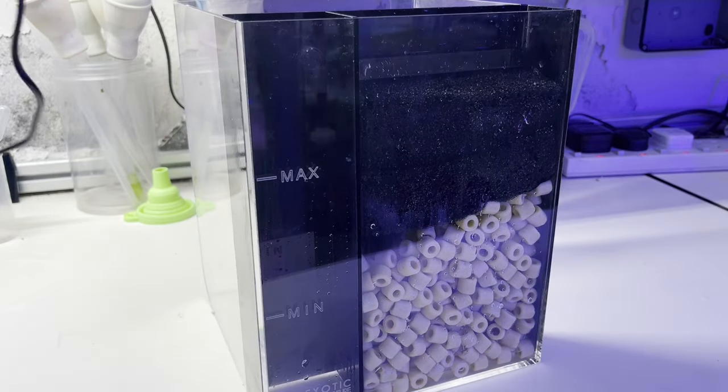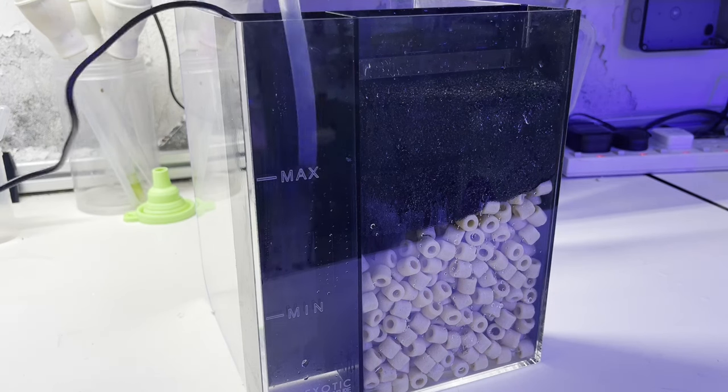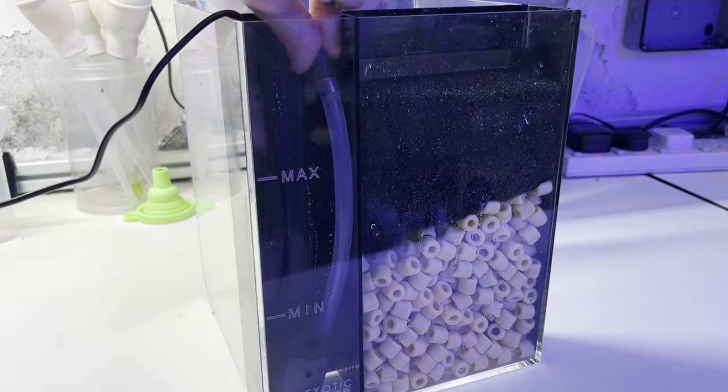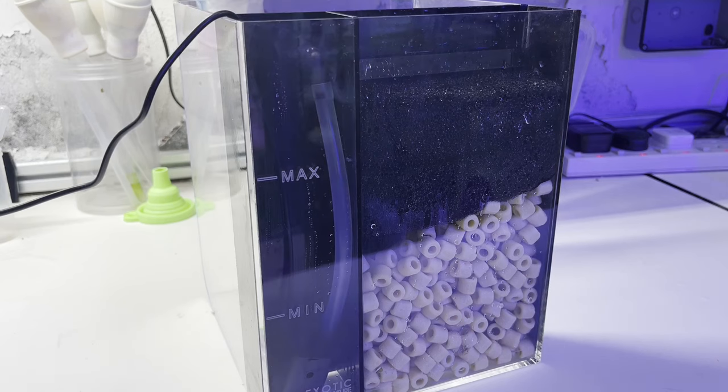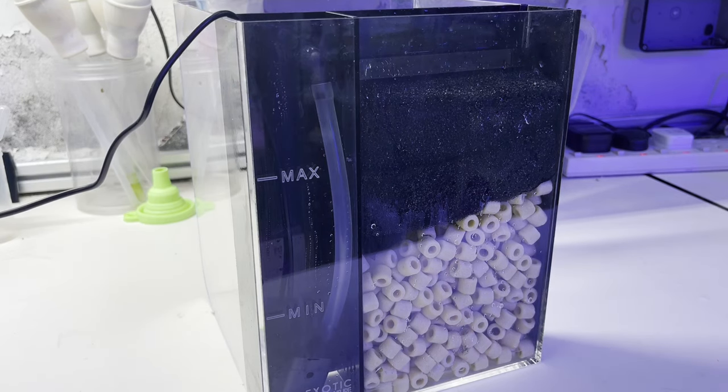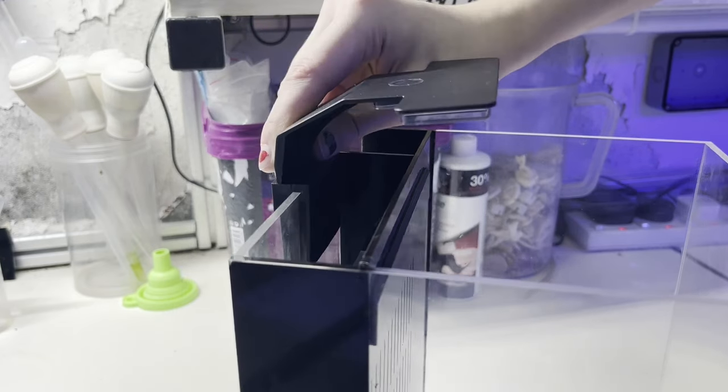With the filter media installed, you can now add the return pump. I suggest removing the plastic elbow from its slot and attaching it outside the tank. It's just easier than trying to do it inside the small compartment. Finally, you can attach the light.